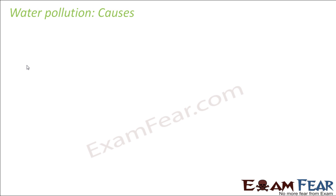Let us quickly look at the causes of water pollution. First, waste water. A lot of waste water comes out from different sources. For example, waste water comes out from each of our houses, which contains a lot of chemicals that might be toxic. It also comes out of the drains, which might contain sewage water as well.